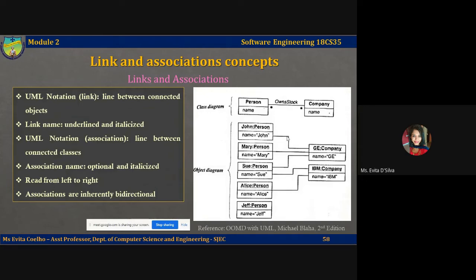Observing the diagram carefully: Sue owns stock in both GE and IBM. John and Mary own stock only with GE. Alice owns stock only with IBM. Jeff does not own stock in any of the companies. This illustrates the difference between links and associations and how to represent them in UML notation.